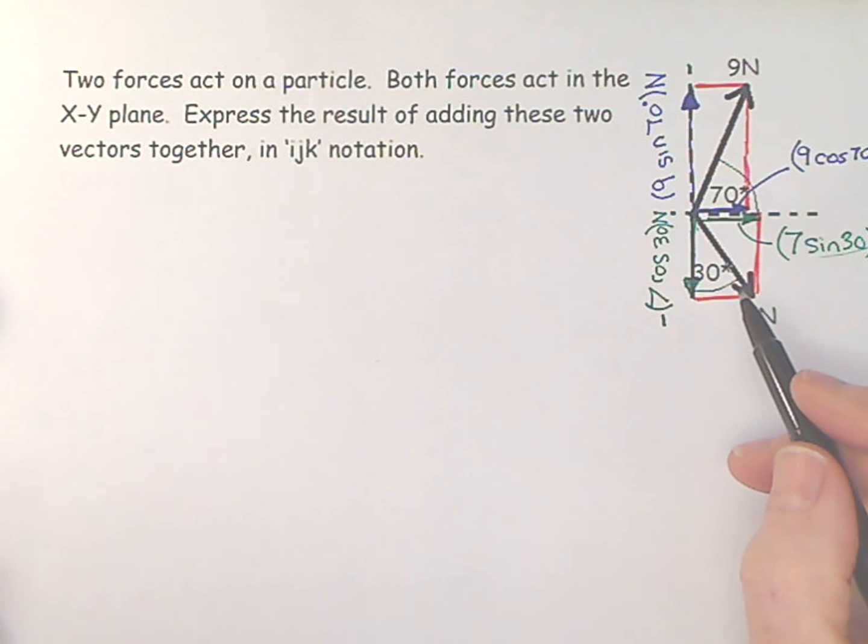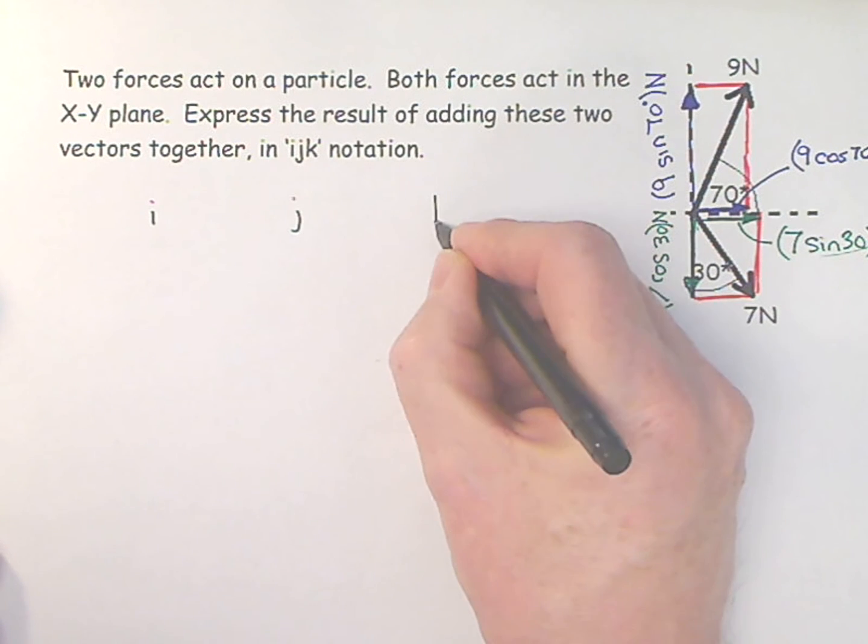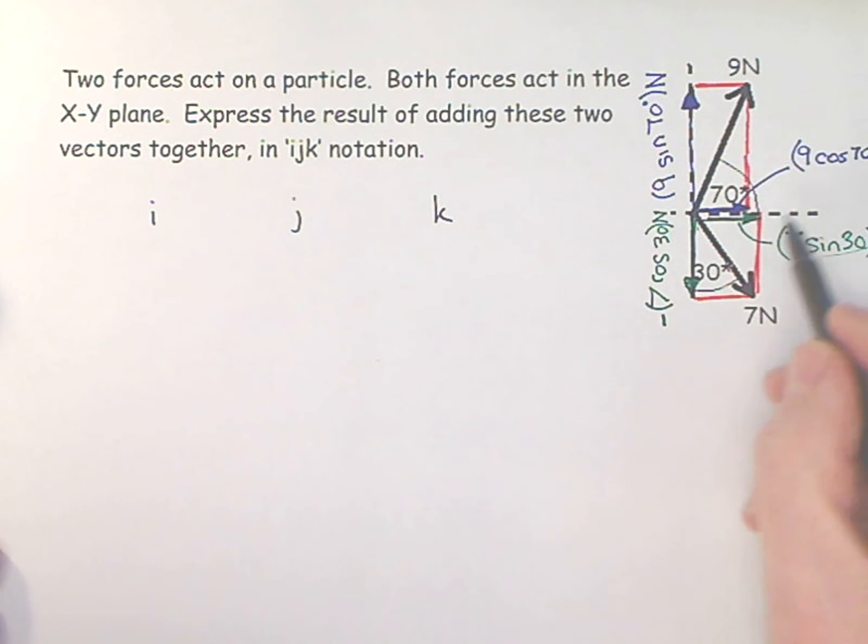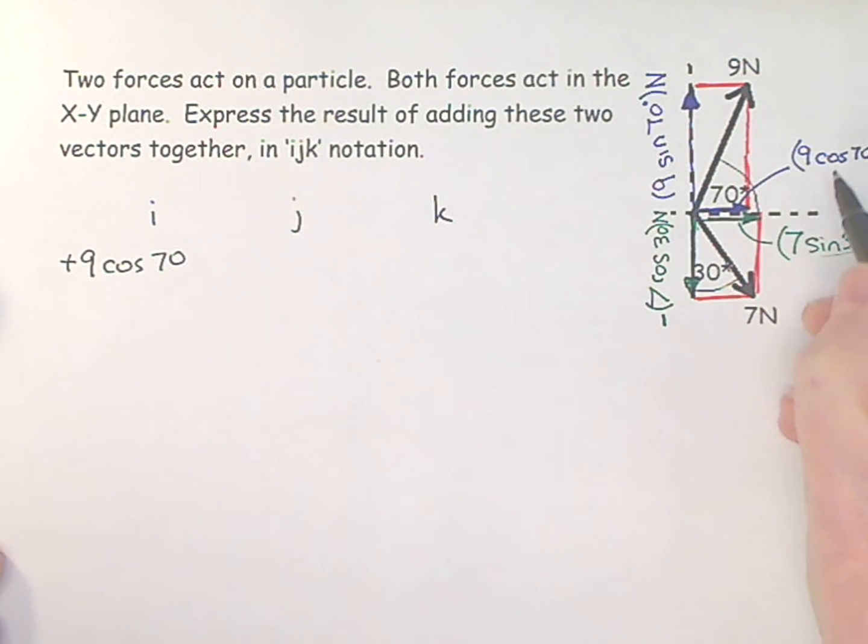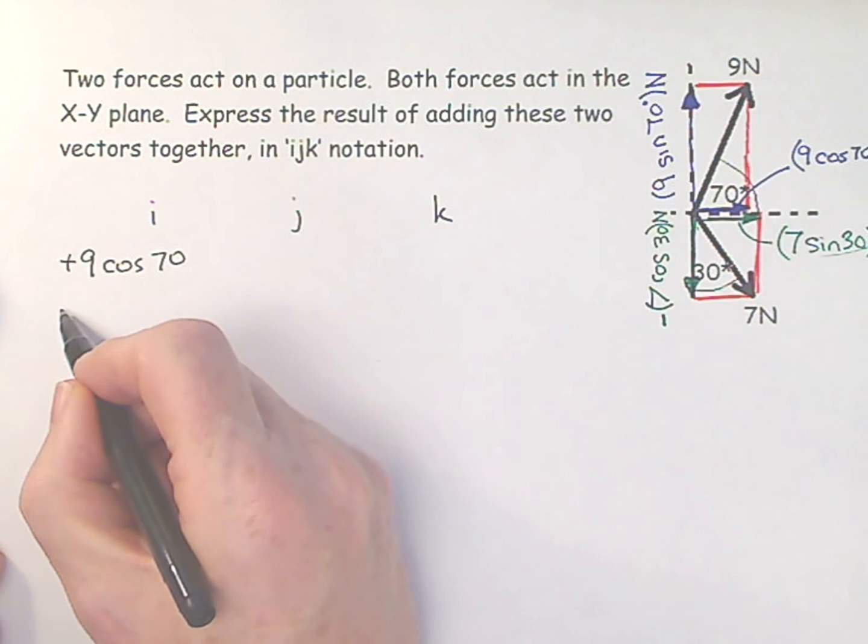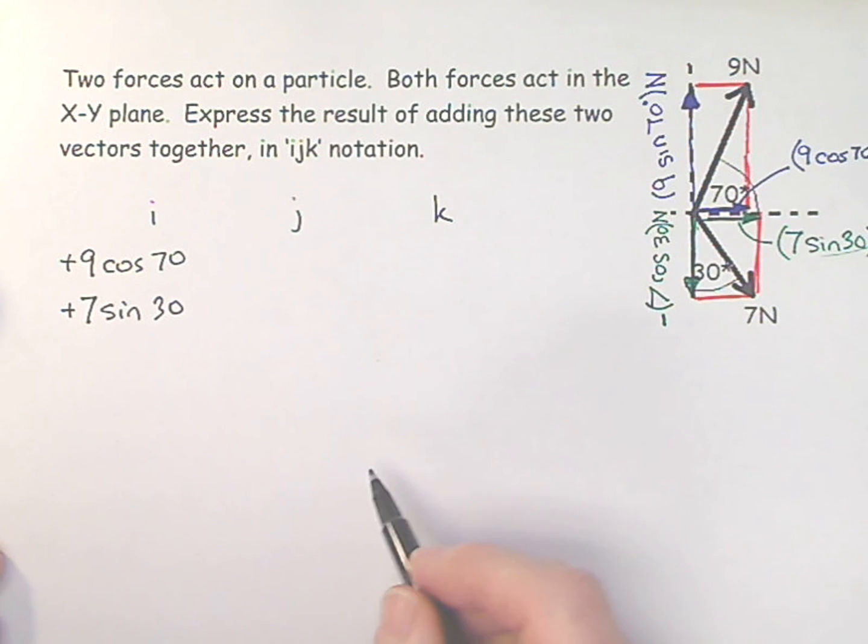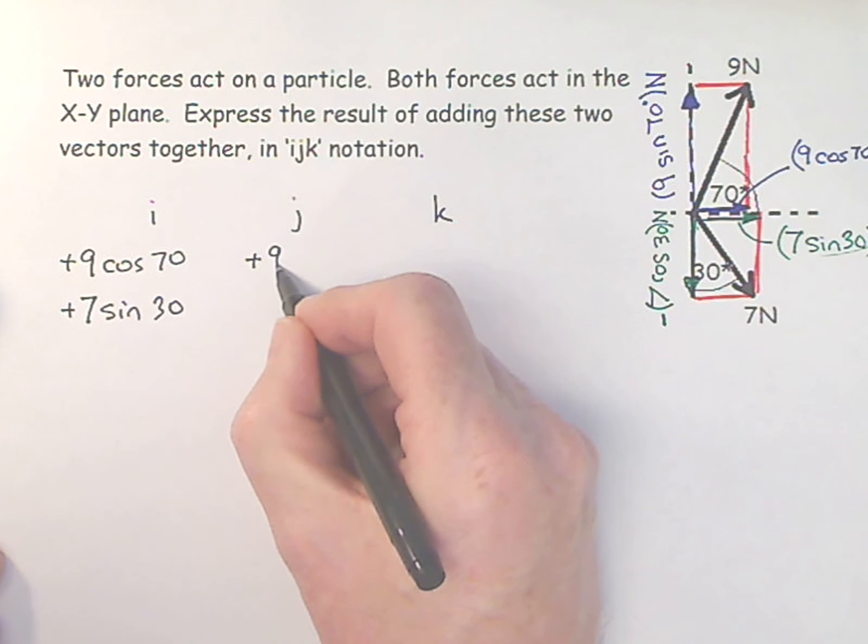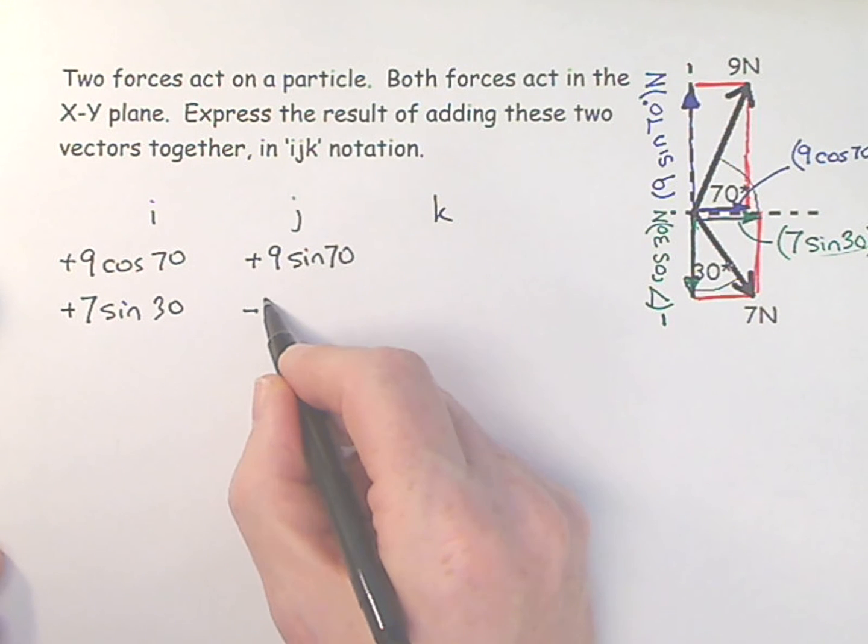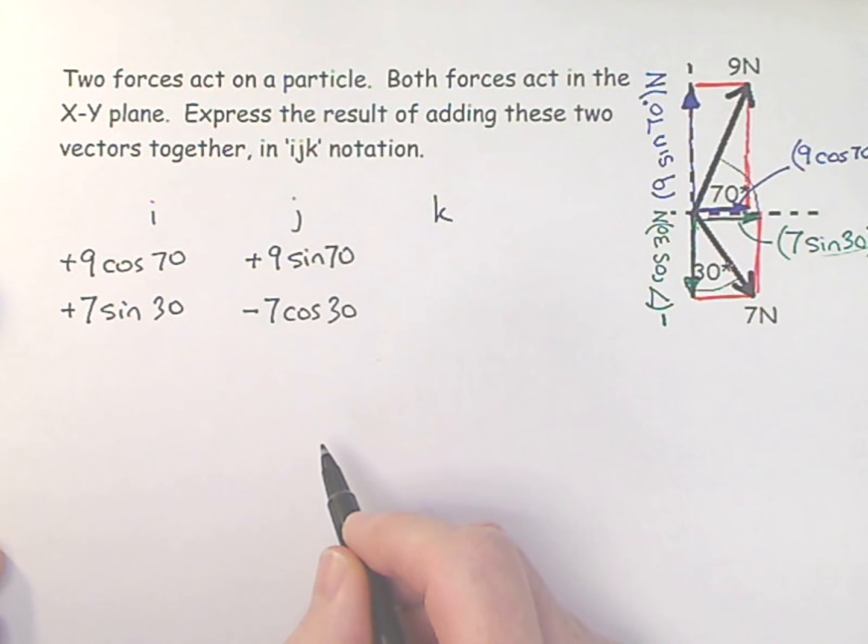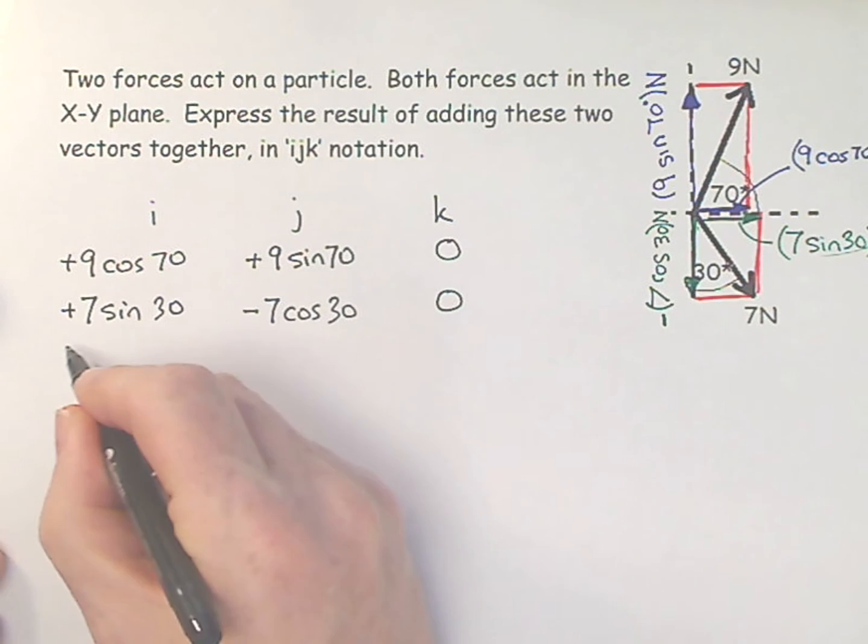So having done that, we need to work out our i, j, k vectors. Let's start writing things down. Let's do the i's to begin with. I have plus 9 cosine 70, that's for this vector here. I have plus 7 sine 30, that's for that vector there. And then over here I have plus 9 sine 70, and then down here I have minus 7 cosine 30. And then I have nothing coming out of or into the board, so I have 0 and 0.